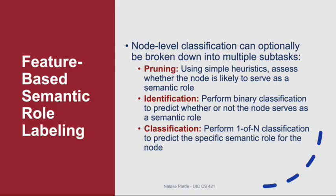In some cases, the node-level classifier might be broken down into multiple subtasks. First, it may prune constituents that are unlikely to serve as semantic roles using simple heuristics. Then, for remaining nodes, it may perform binary classification to determine whether a given node serves as a semantic role or not. Finally, for nodes labeled as semantic roles, it may perform more fine-grained classification to determine the semantic role for a given node. This process may lead to better performance, since certain features may be more useful for certain subtasks than others, as well as increased computational efficiency.